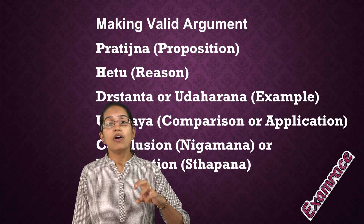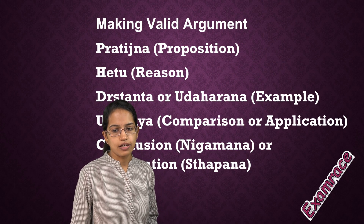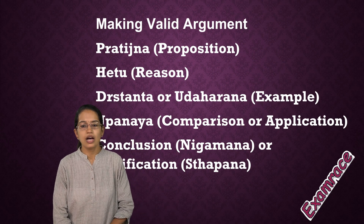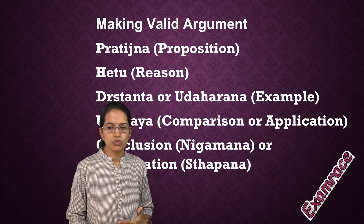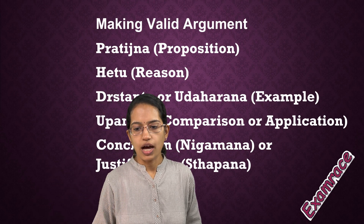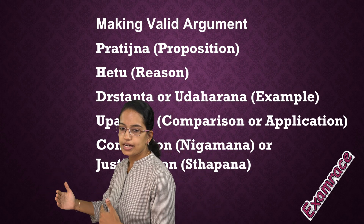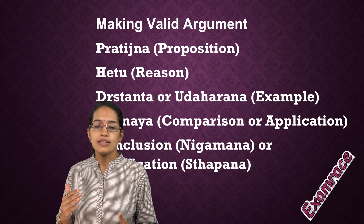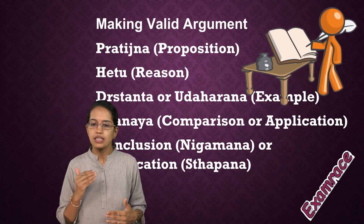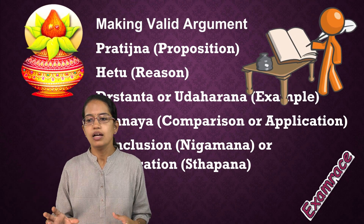Then we have a valid argument. What are the characteristics of a valid argument? You have a proposition which is known as Pratijnya. The reason for it is the Hetu. You explain it through an Udaharana or the Drishtanta. Then you try to compare it, which is Upanaya, and finally you come to a conclusion which is Nigama, or justification which is the Sthapana.